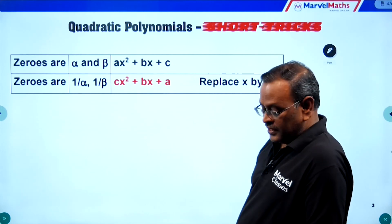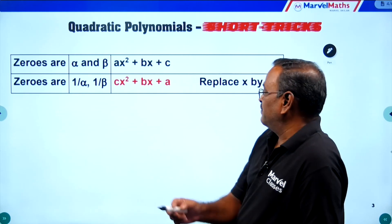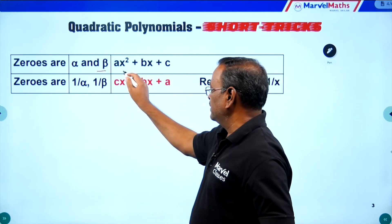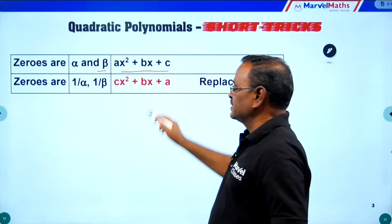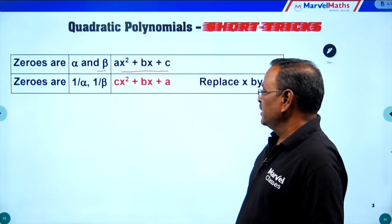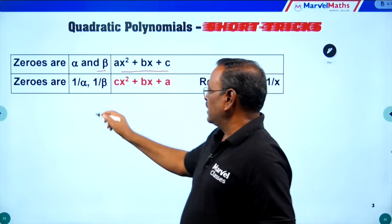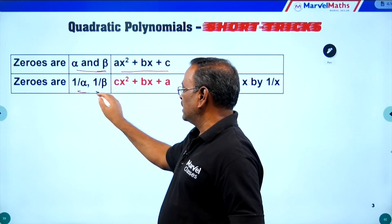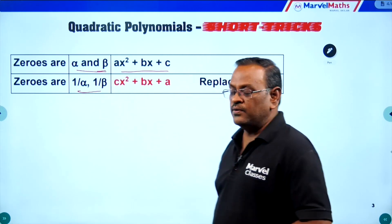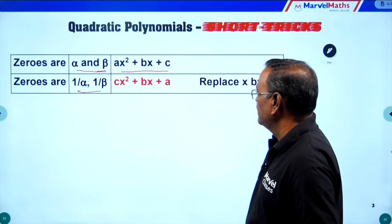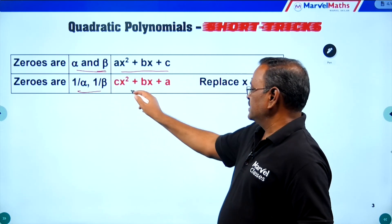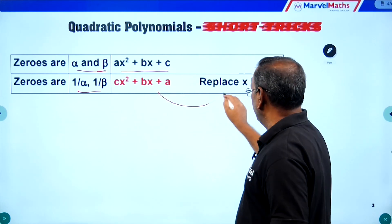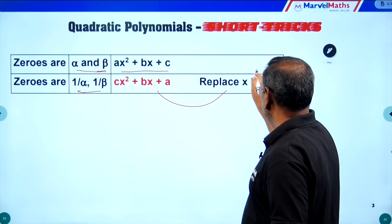Here is the short trick: for the original polynomial ax squared plus bx plus c, if the original zeros are alpha and beta, and the new zeros are 1 by alpha and 1 by beta, then the new polynomial is cx squared plus bx plus a. This is derived by applying the short trick of replacing x by 1 by x.